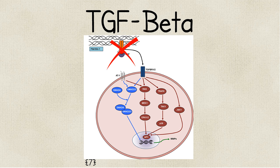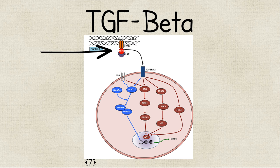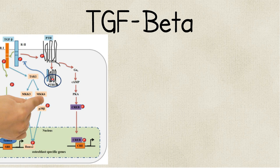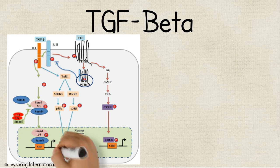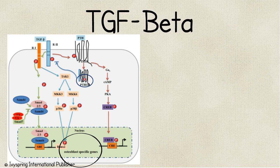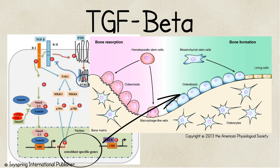However, in someone with Marfan's, when there are fewer functional microfibrils, there is less stored, inactive TGF Beta and more active TGF Beta. This TGF Beta is then responsible for osteoblast activity in early development, which, if you recall from anatomy, would explain the longer bones of the fingers and limbs commonly found in patients with Marfan's.